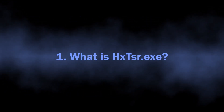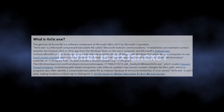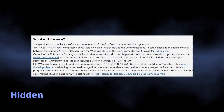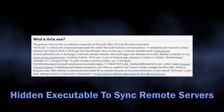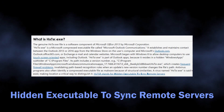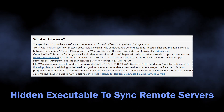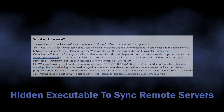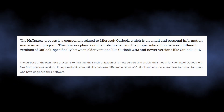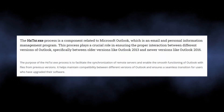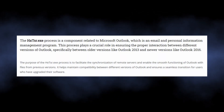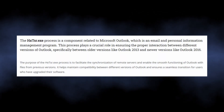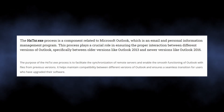HXTSR is a part of Windows, specifically its network communications component. This process is responsible for proper network synchronizations in several areas of the system at the same time. In particular, it orchestrates the communication of a lot of Microsoft Office applications — Outlook, Mail, Calendar, and things like that — with Microsoft servers.